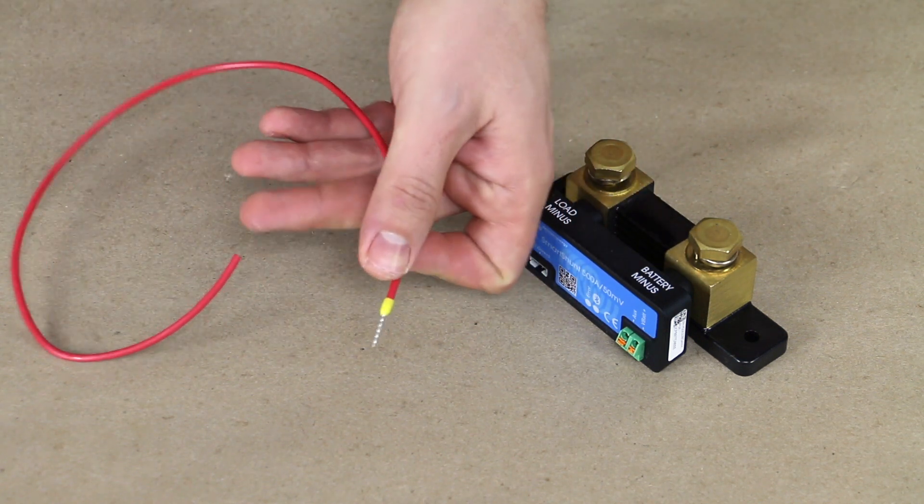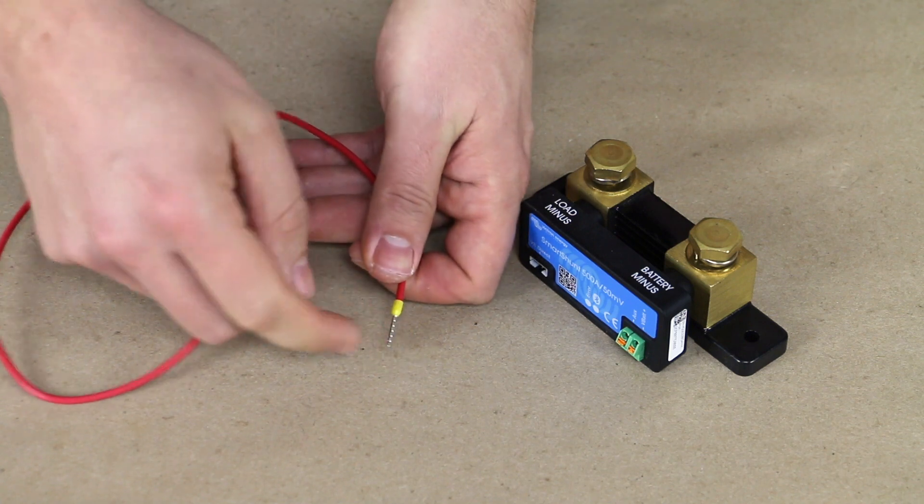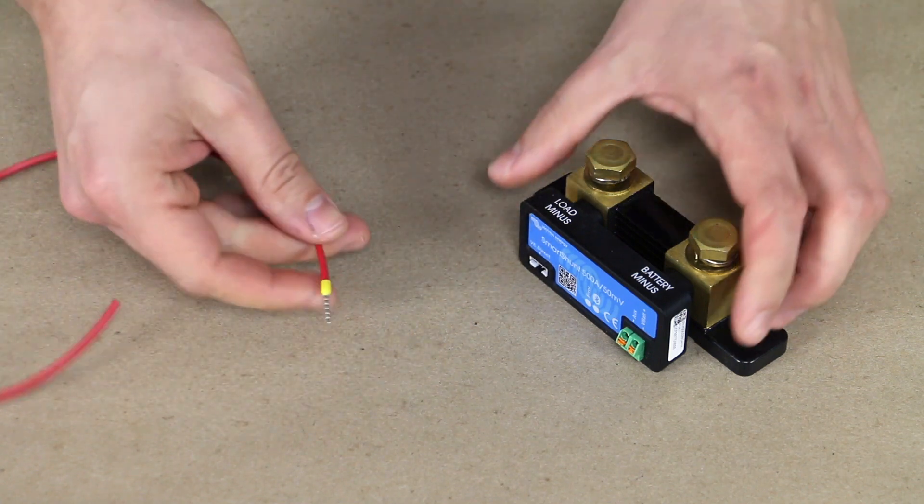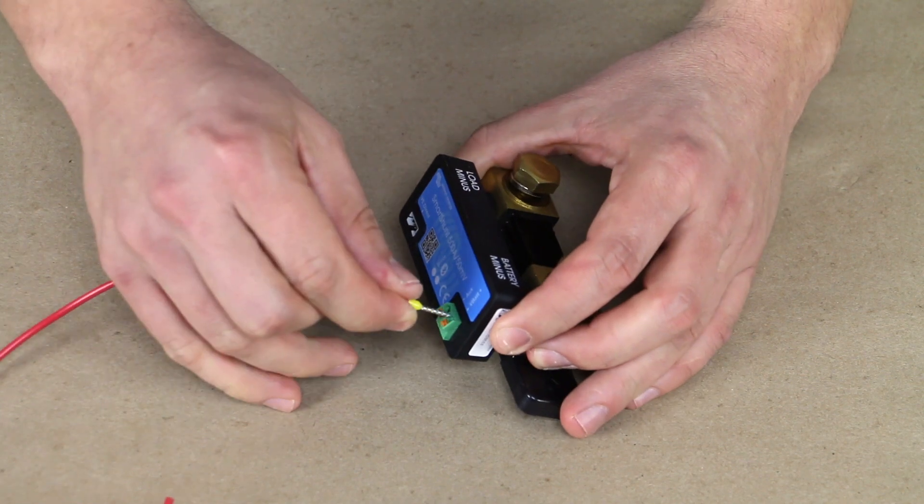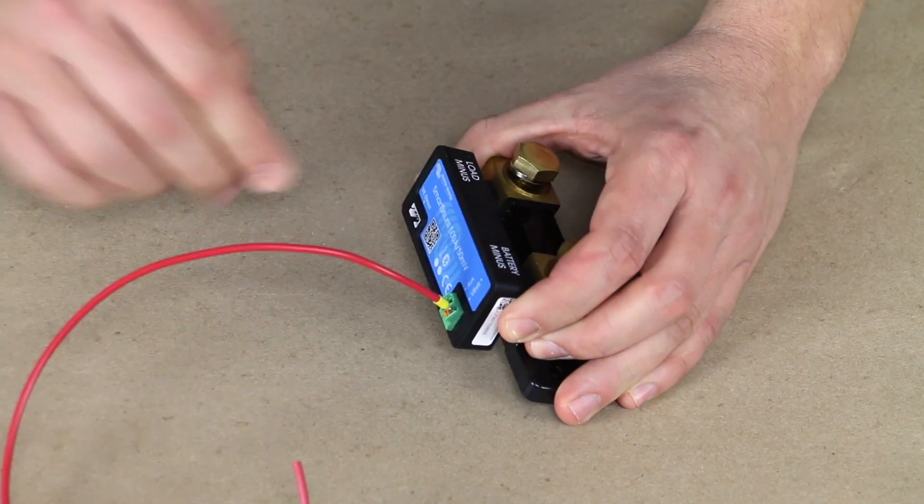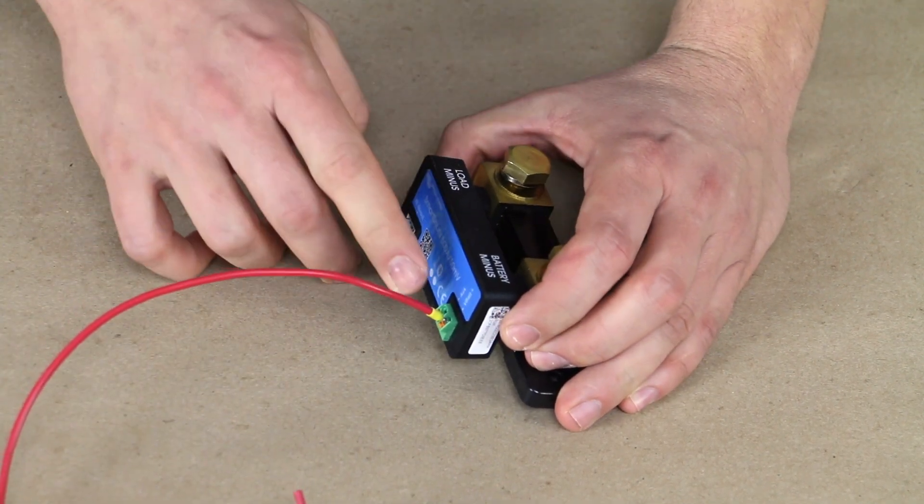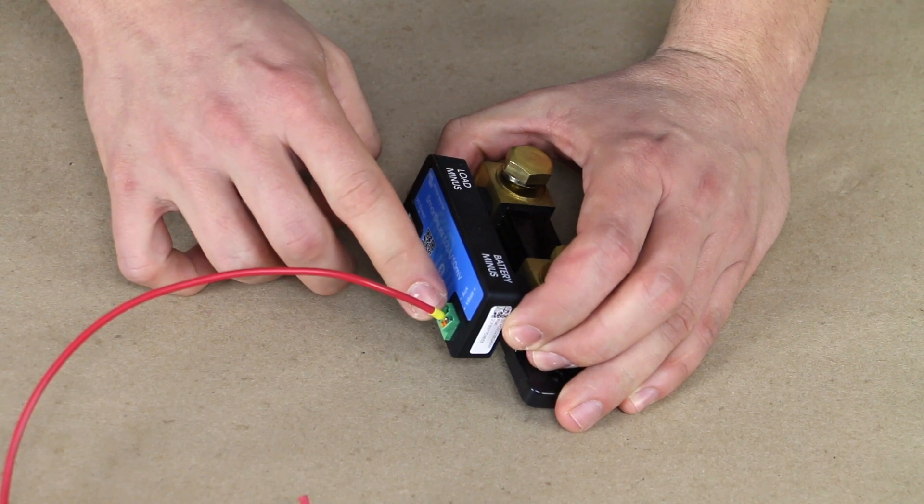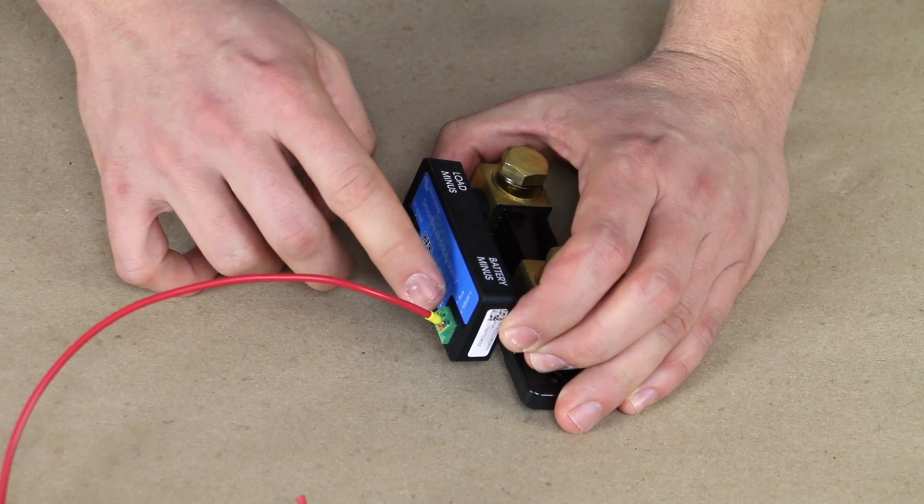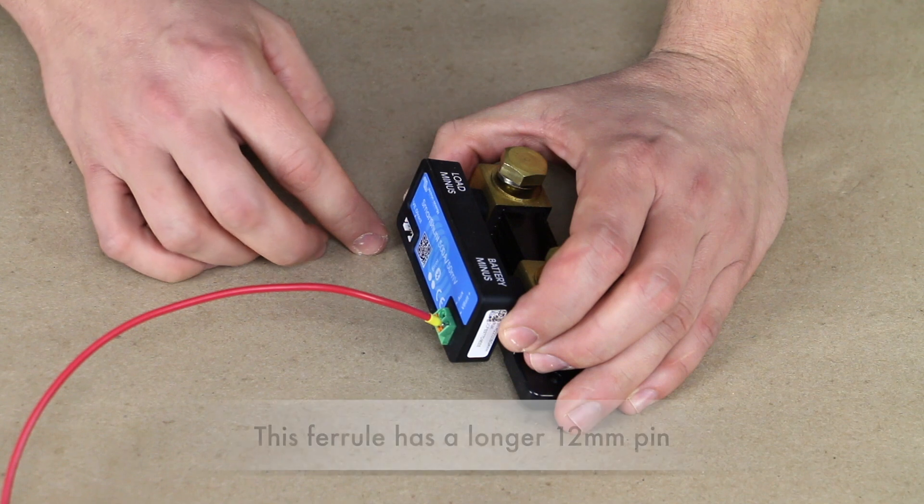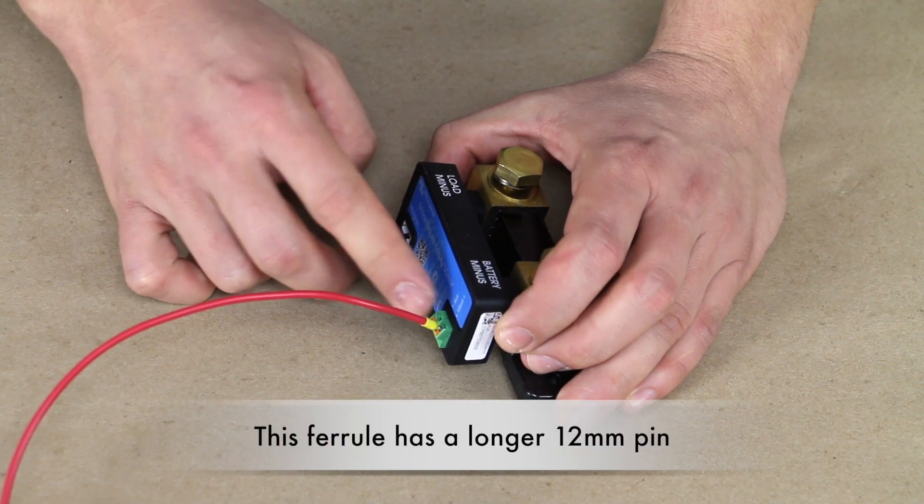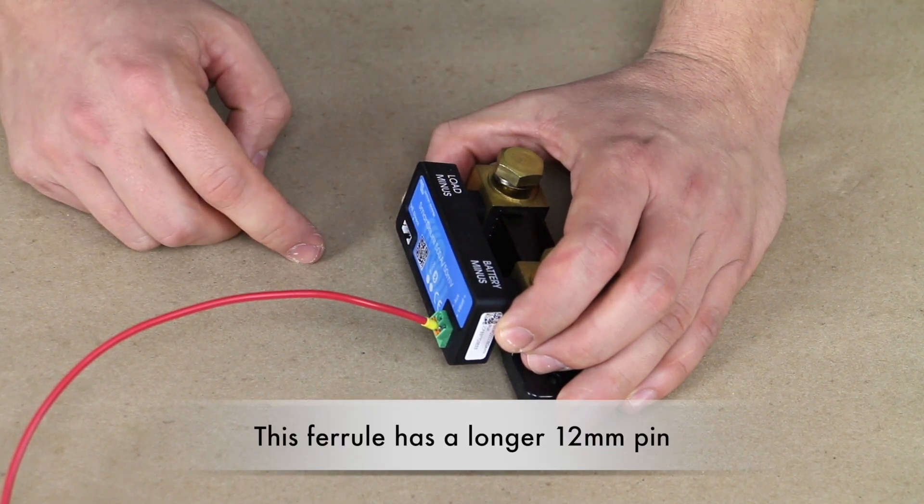And you can see the little ridges that we have there. Those are going to make it so that the wire is less likely to pull out of the connection. And then we're just going to press it into the connection there. Now, some of these Victron inputs are a little bit deeper.